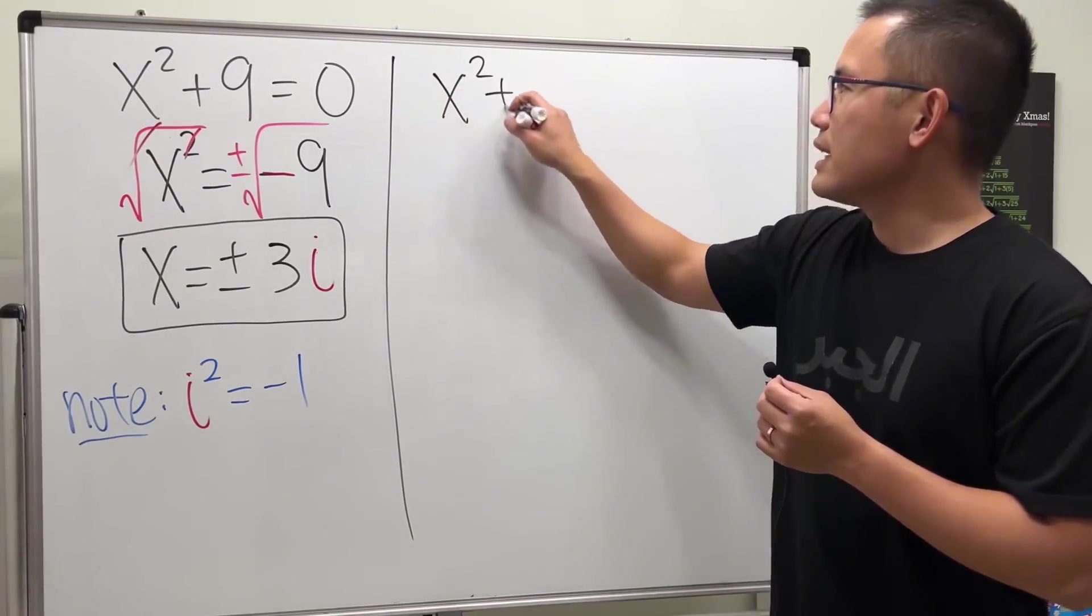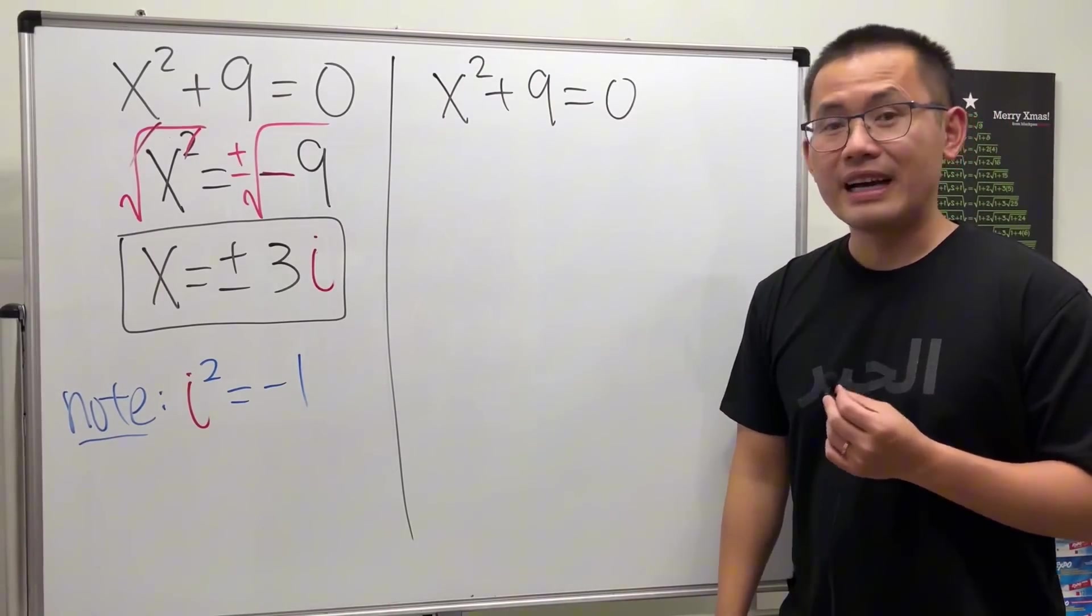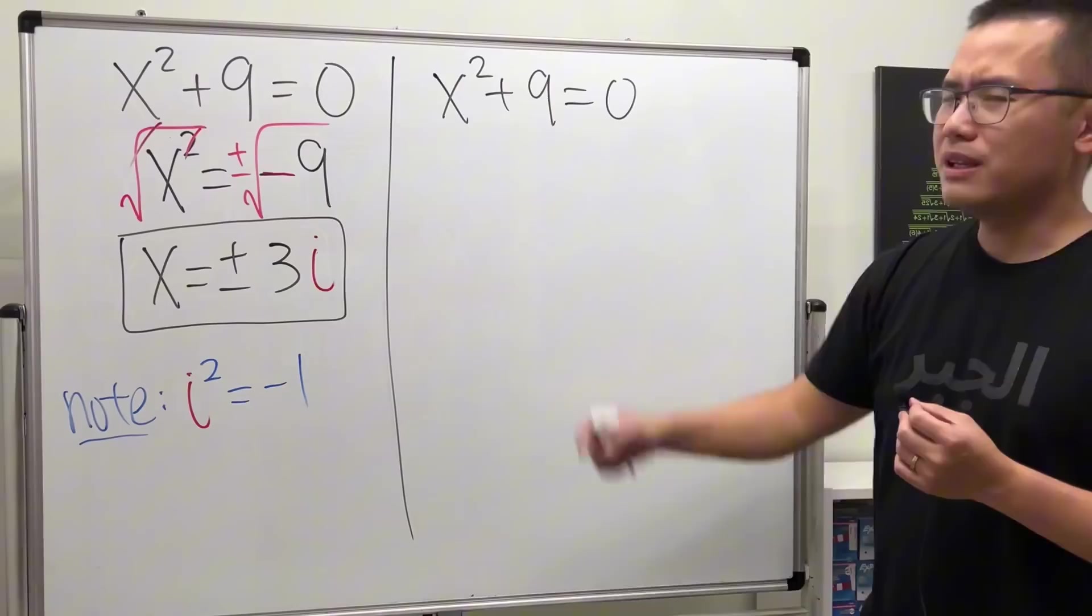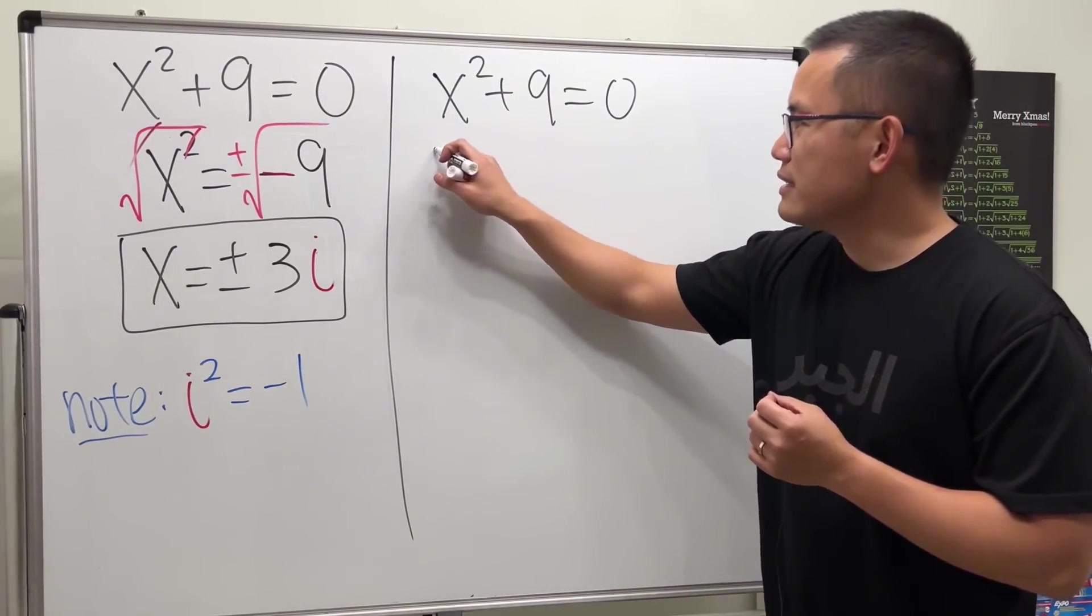x squared plus 9 equal to 0. We can do this by factoring. How? Difference of two squares. But this is a plus. Don't worry. Let me show you.